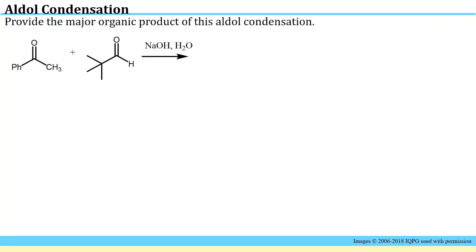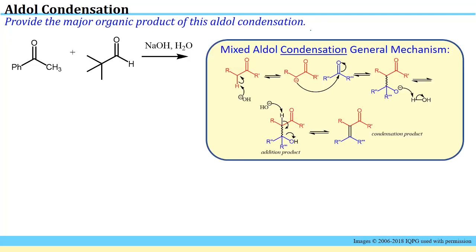The next problem asks us to provide the major products of an aldol condensation, rather than an aldol addition. To remind you of the general mechanism for the aldol condensation, recall that you first do the aldol addition to get the aldol addition product. In a second step, we deprotonate the alpha position of that carbonyl which already served as the nucleophile, and then we perform elimination of the hydroxide leaving group to form a double bond.